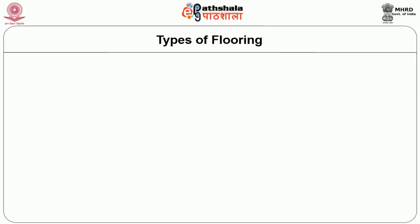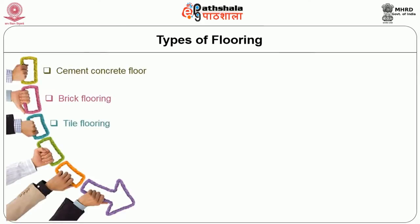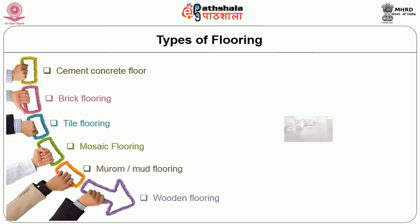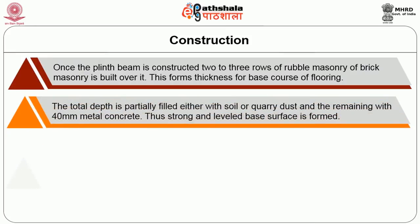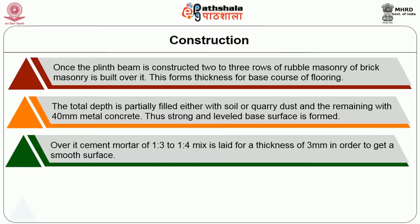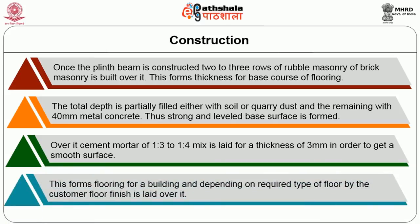Level 5 is flooring. It is the lower surface of the room on which one can walk. Types of flooring include cement concrete floor, brick flooring, tile flooring, mosaic flooring, murram or mud flooring and wooden flooring. All these types depend upon the customer's wish, budget and functionality of the building. Once the plinth beam is constructed, two or three rows of rubble masonry or brick masonry is built over it, forming the base course for flooring. The total depth is partially filled with soil or quarry dust, and remaining with 40 mm metal concrete, forming a strong and leveled base surface. Over it, a cement mortar of 1:3 to 1:4 mix is laid for a thickness of 3 mm to get a smooth surface, forming the flooring for the building.